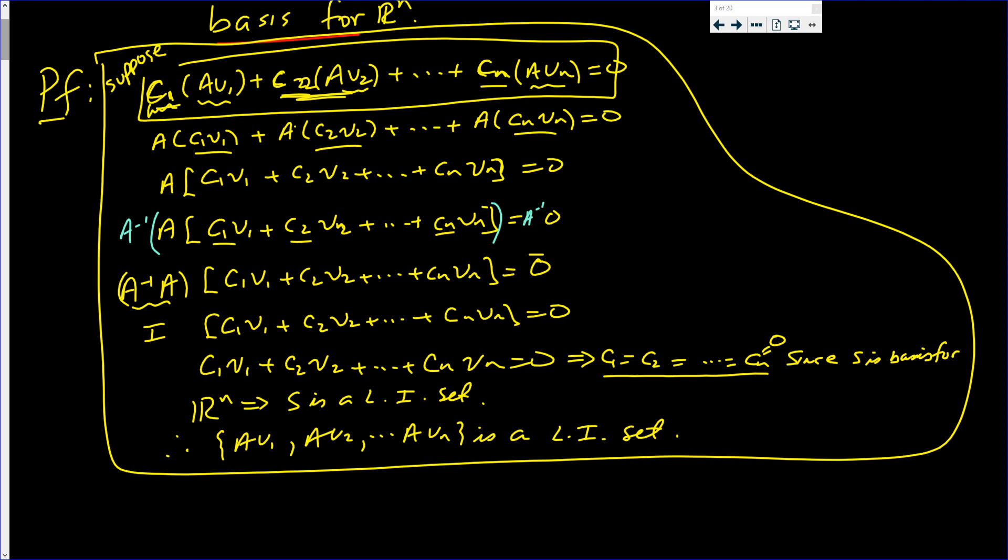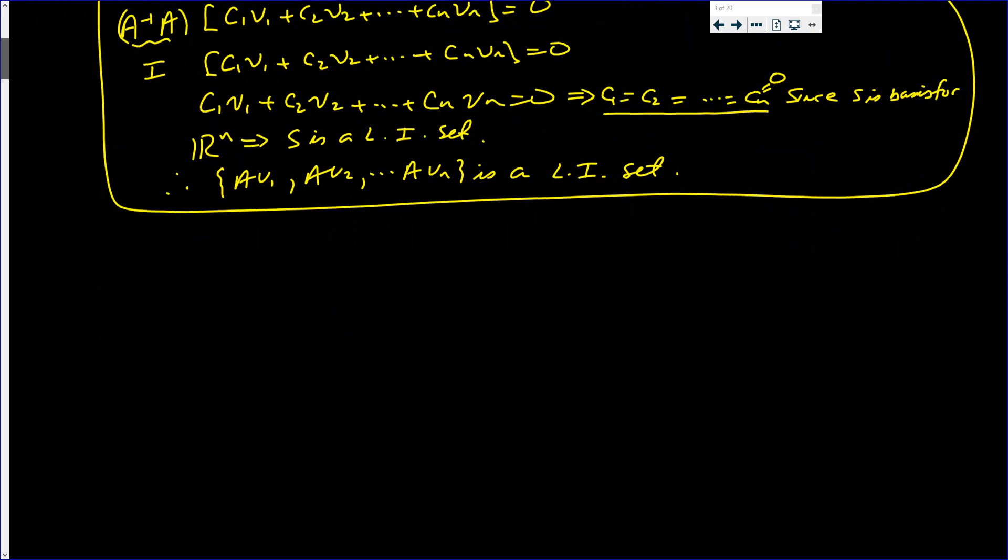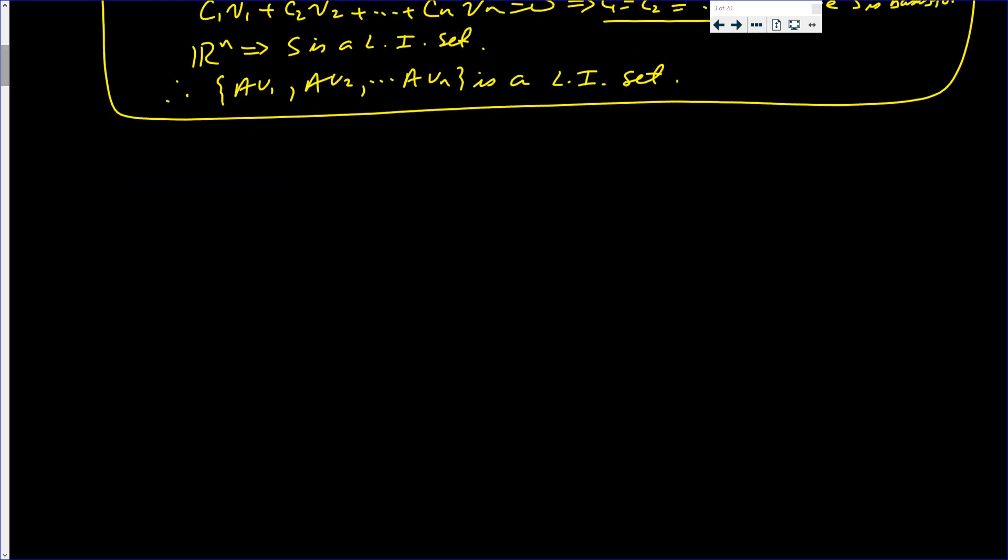Now, I just have to show that the vectors in T, Av1, Av2 to Avn span R^n. Let me think for a moment. Since A inverse V is in R^n, that implies that there exists C1, C2, up to Cn.